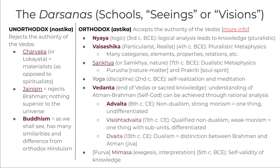These schools are classified into two separate categories. On the right, we have what are considered the orthodox or asthika darsanas. These are considered orthodox because they accept the authority of the Vedas — all of these schools on the right accept the Vedas as sacred texts and build their conceptions of metaphysics and epistemology off of those texts.